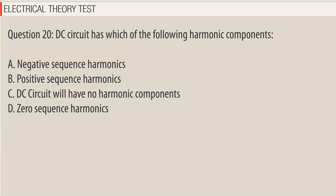Question 20: A DC circuit is which of the following harmonic components? A. Negative sequence harmonics. B. Positive sequence harmonics. C. DC circuit will have no harmonic components. D. Zero sequence harmonics.